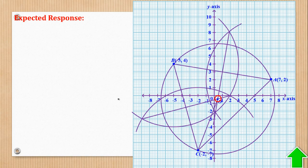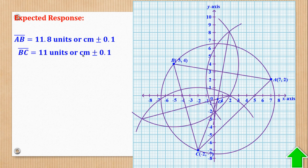Next was to measure the length of each side. AB = 11.8 units or cm ± 0.1 to cater for errors. BC = 11 units ± 0.1. AC = 12.3 units, meaning 12.2 is okay and 12.4 is okay.